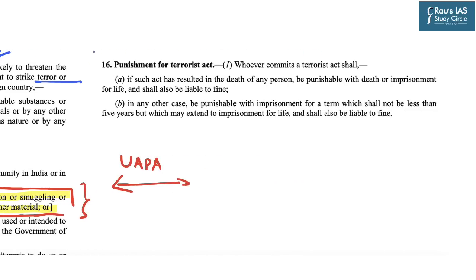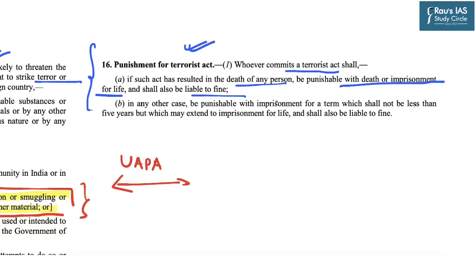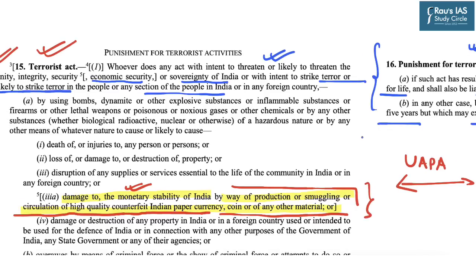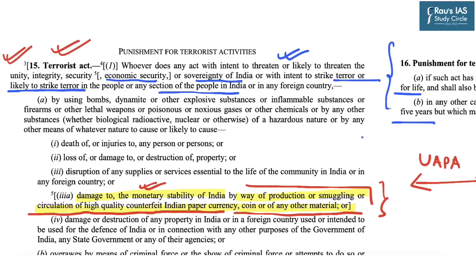The UAPA also provides punishment for terrorist acts. It says that whoever commits a terrorist act shall, if such act has resulted in the death of any person, be punishable with death or imprisonment for life and shall also be liable to fine. In any other case, they shall be punishable with imprisonment for a term which shall not be less than five years but which may extend to imprisonment for life, along with fine. Thus, smuggling of counterfeit notes within the territory of India has also been described as a terrorist act under UAPA.